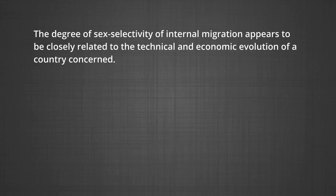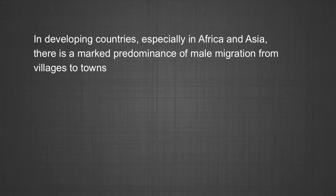In earlier times, international and long distance migration almost always showed a marked predominance of males, thus creating an imbalance in the sex ratio in both the sending as well as the receiving areas. The degree of sex selectivity of internal migration appears to be closely related to the technical and economic evolution of the country concerned. In developing countries, especially in Africa and Asia, there is a marked predominance of male migration from villages to towns. In economically advanced nations, the reverse is generally true, and females also migrate from rural to urban areas.